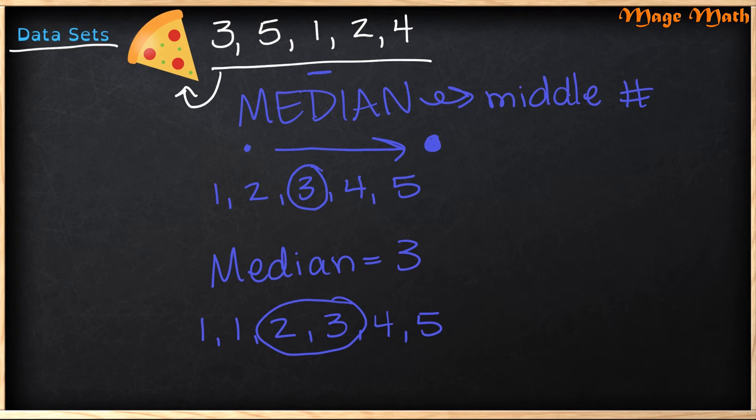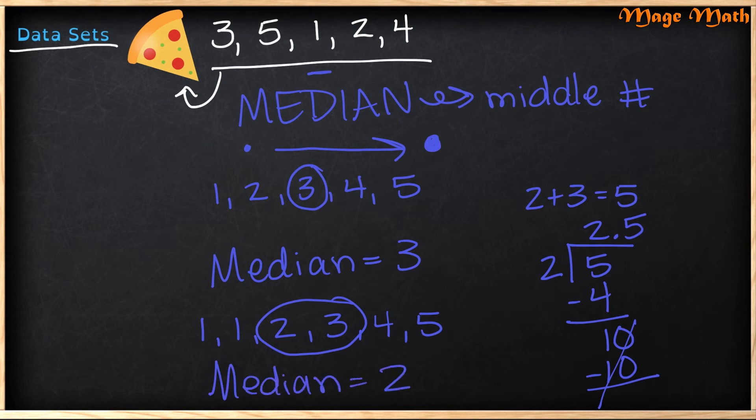That's right. We add and then divide. So if we add two plus three, we know that's five. Then we have two numbers in our set, so we will divide. Two goes into five two times. Subtract our four, we get one. There's nothing else to add there, so we put our decimal, bring a zero down. Two can go into ten five times, and we get 2.5. So in this case, our median would be 2.5.